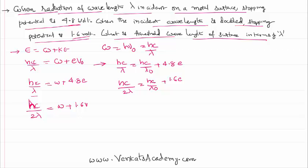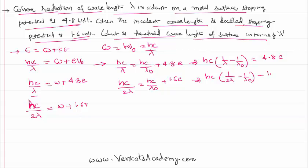We rearrange these equations: hc*(1/lambda - 1/lambda₀) = e(4.8), and hc*(1/(2*lambda) - 1/lambda₀) = e(1.6). Dividing these two equations will further solve the problem.